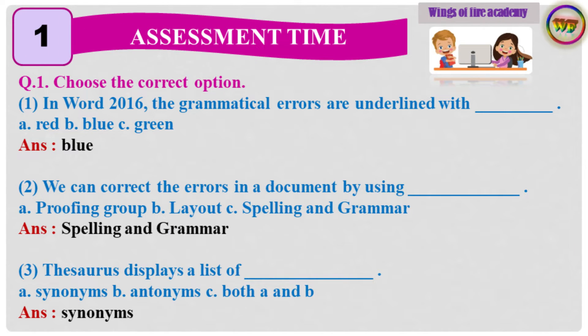Question 1: Choose the correct option. Question 1: In Word 2016, the grammatical errors are underlined with — Answer: Blue. 2. We can correct the errors in a document by using — Answer: Spelling and Grammar. 3. Thesaurus displays a list of — Answer: Synonyms.